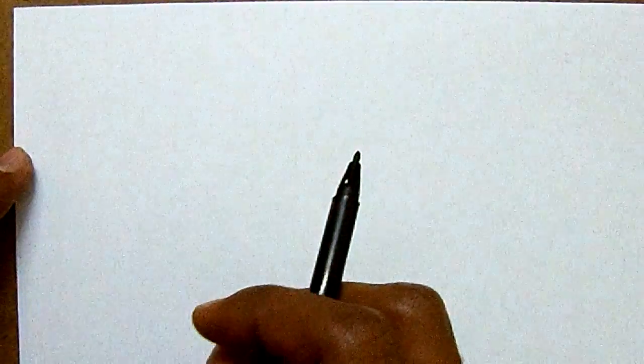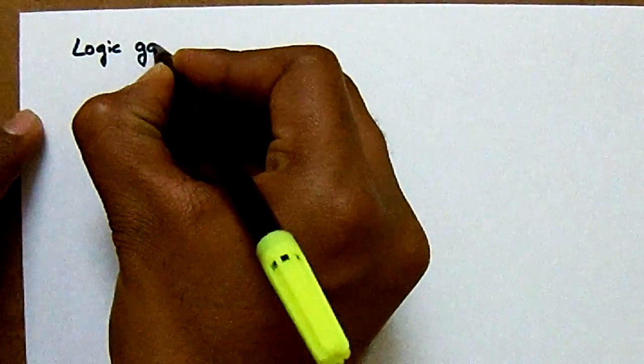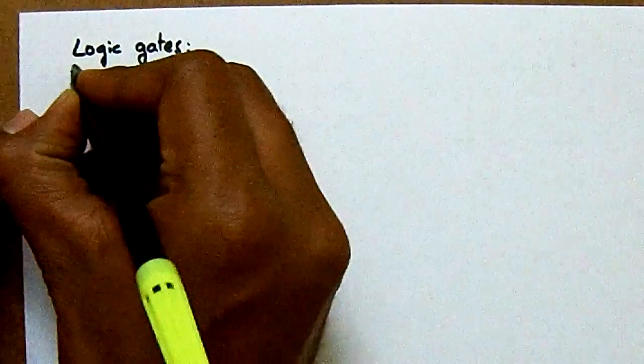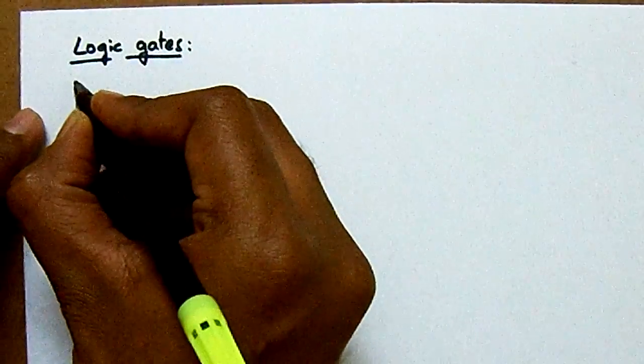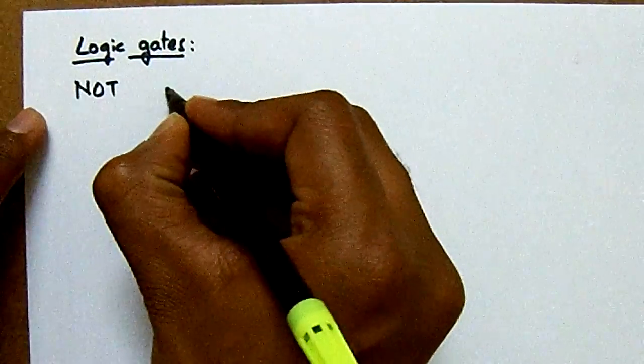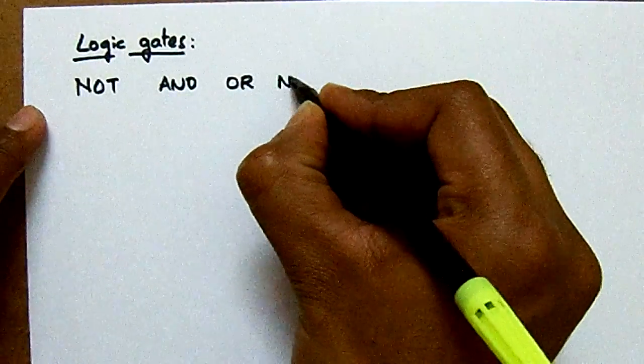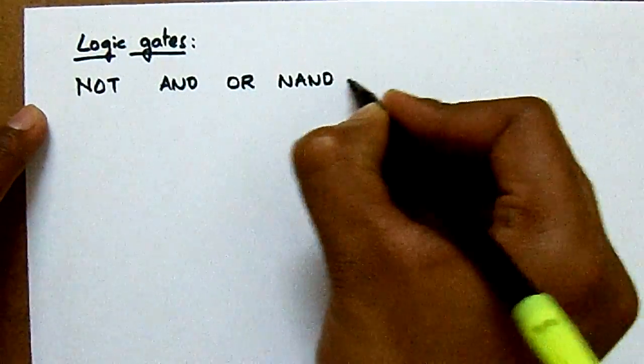Hello everyone, today let us see what are logic gates and what are universal gates and how do we derive each and every logic gate from a universal gate. The basic logic gates are NOT, AND, OR, NAND, NOR, XOR, and XNOR.